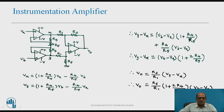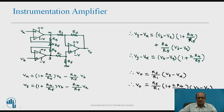We require phi Y minus phi X. Subtracting phi X from phi Y: phi Y − phi X = (1 + R4/R5) × (phi B − phi A), since the (1 + R4/R5) term is common. Therefore the final output is: phi O = (Rf/R1) × (1 + 2R4/R5) × (phi B − phi A).